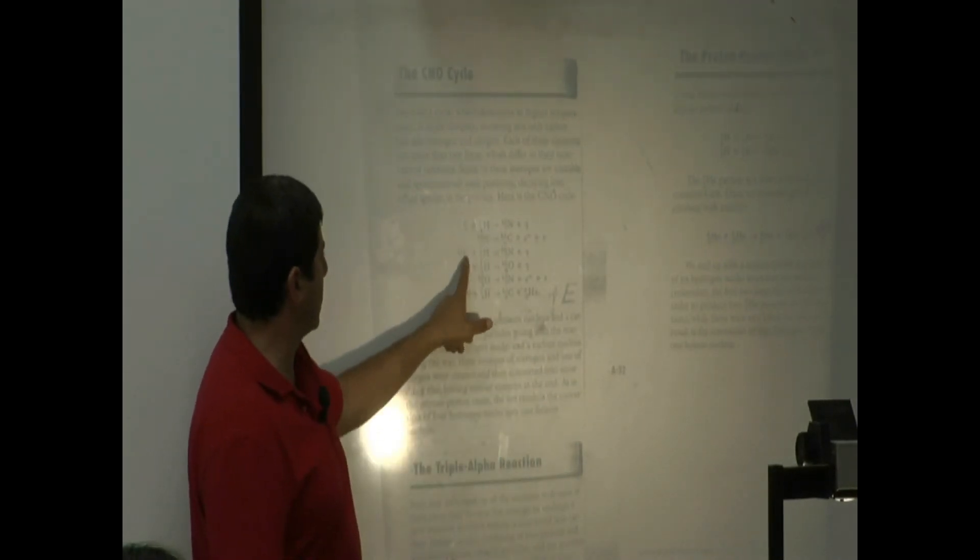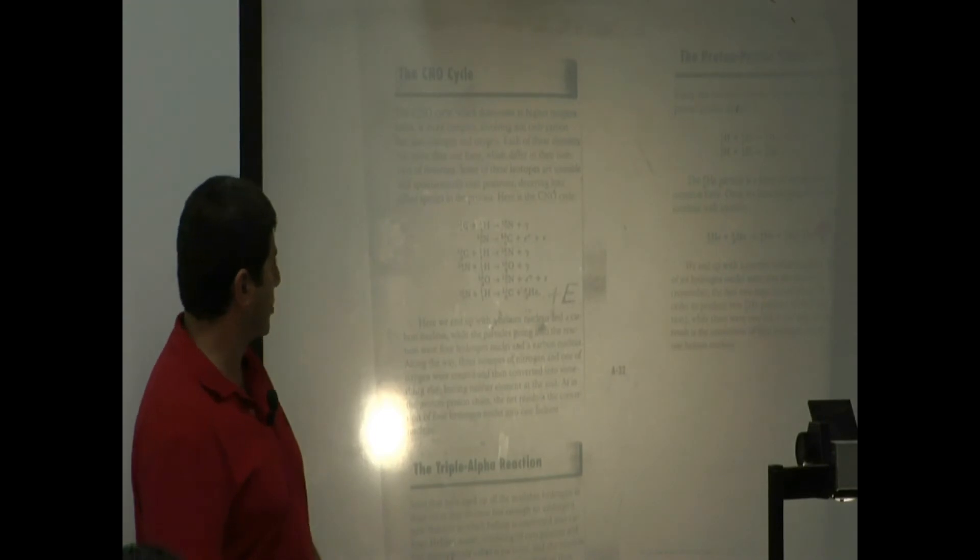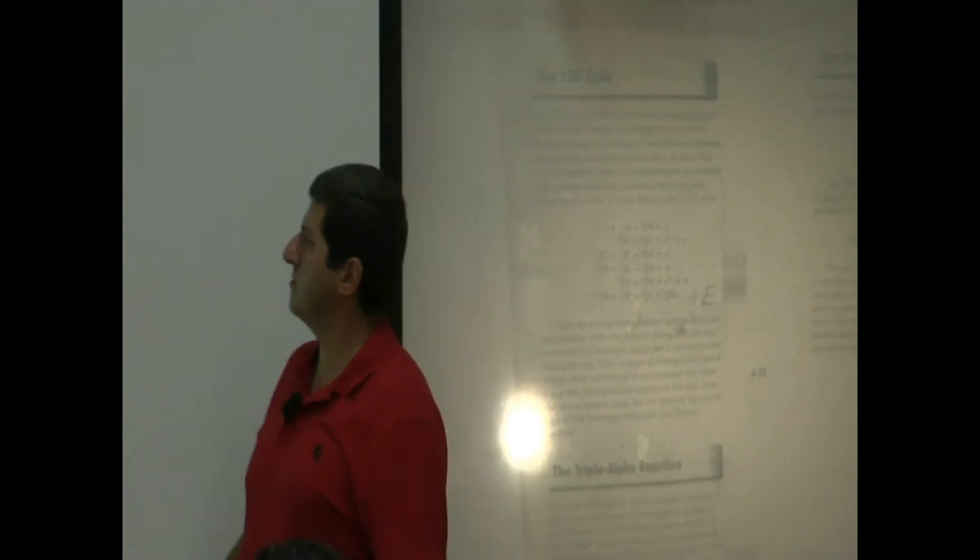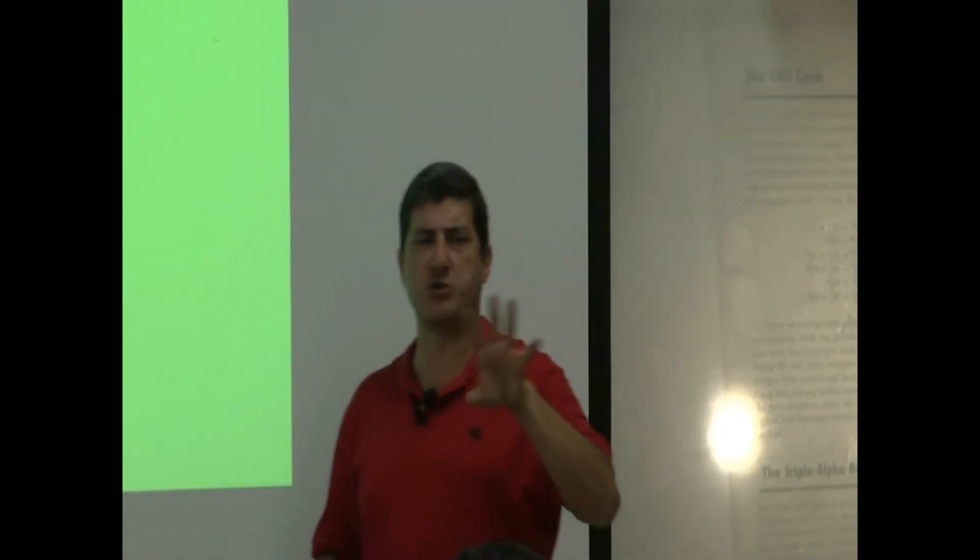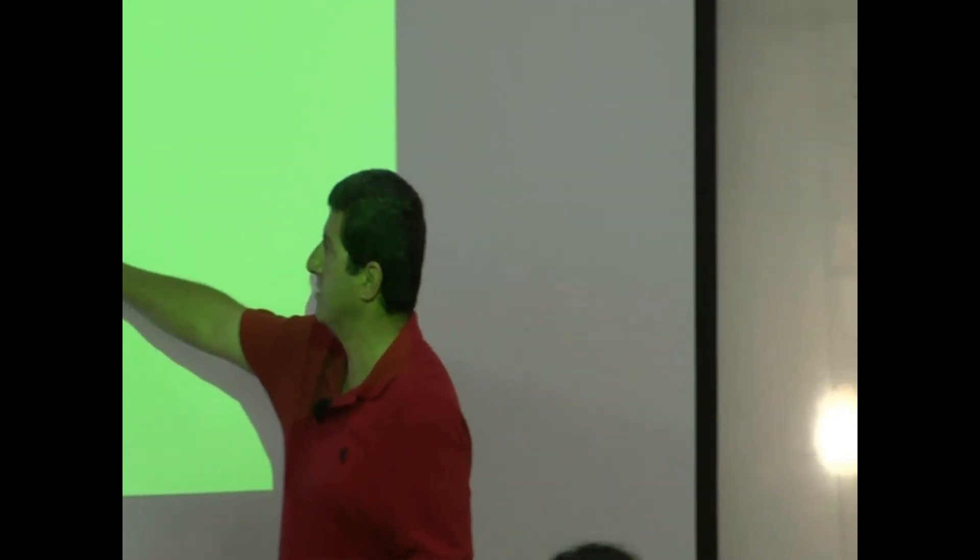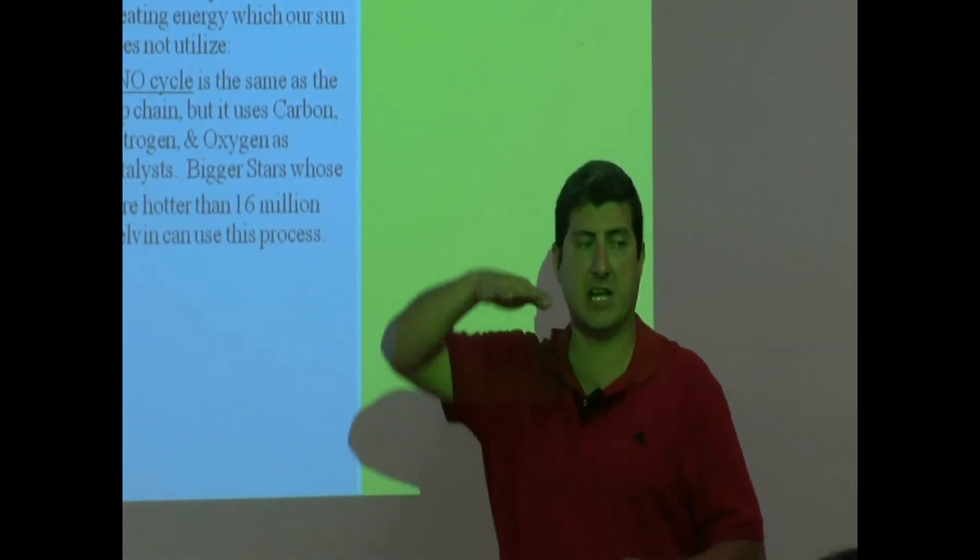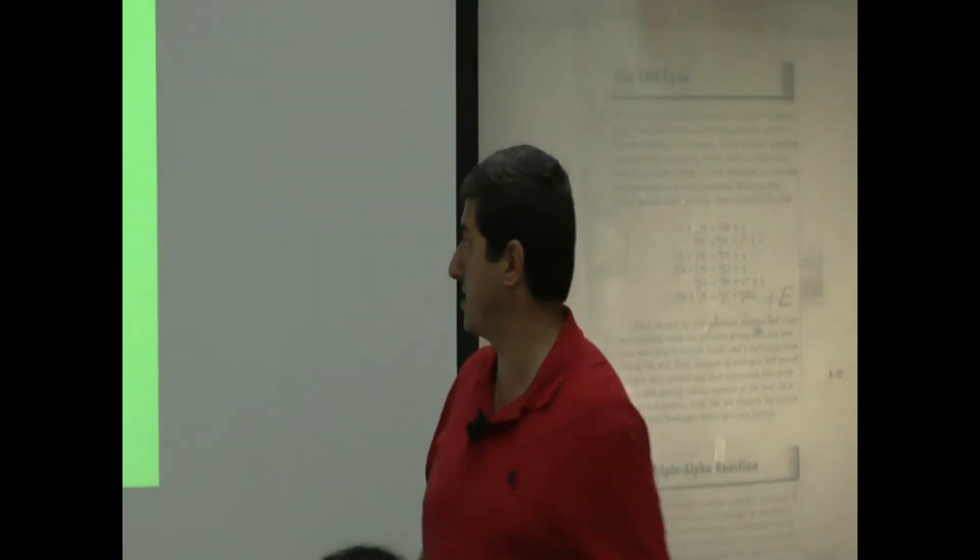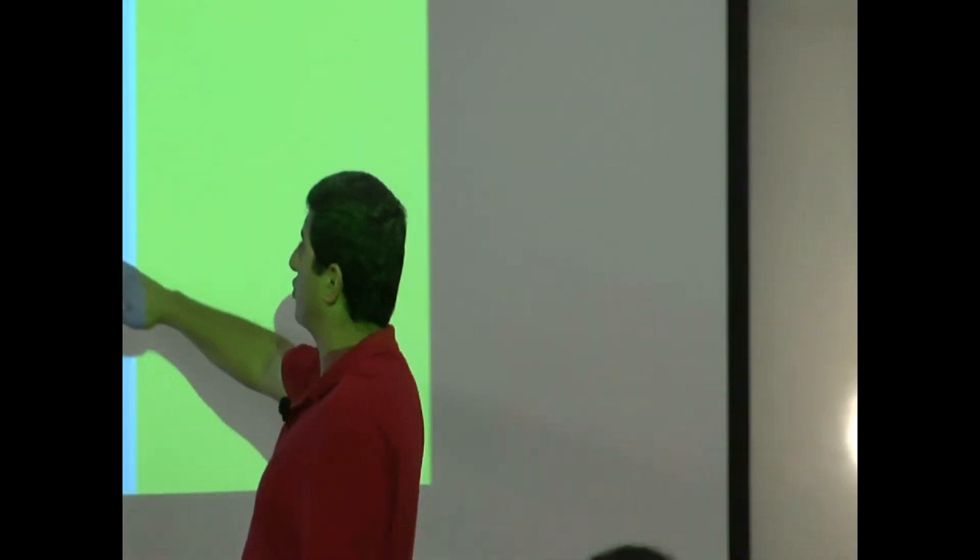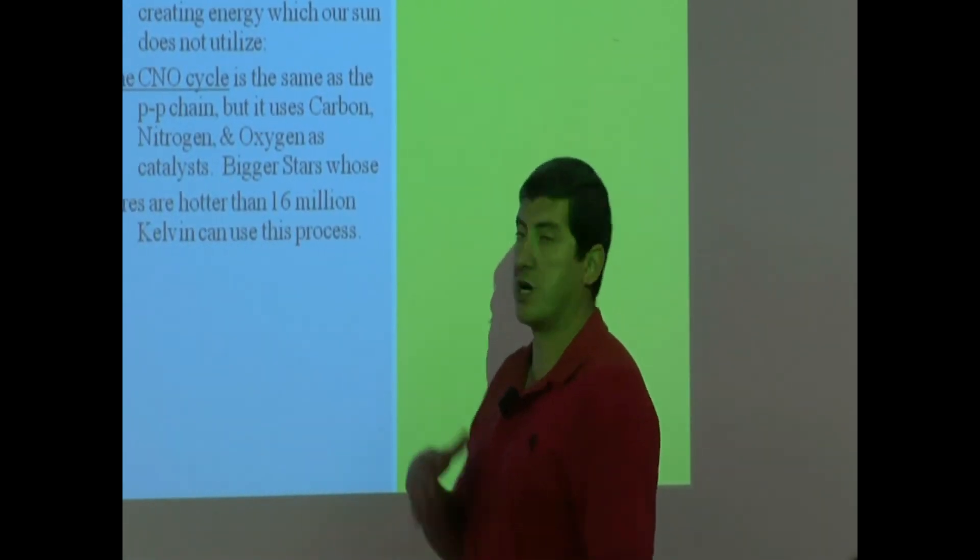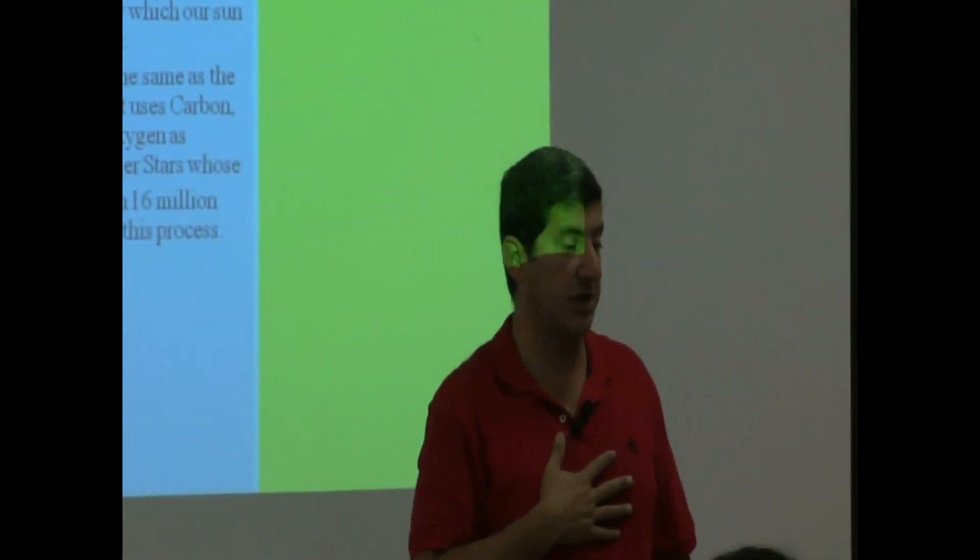Some of these isotopes are unstable and then spontaneously emit positrons, decaying into other species. Here's the CNO cycle. Carbon, hydrogen, nitrogen, so on and so forth. So basically, the effect is you end up with energy and helium again. So for our purposes, just remember that the CNO cycle is kind of like the proton-proton chain. It happens at higher temperatures and only heavy-mass stars can use this process. Bigger stars, whose cores are hotter than 16 million Kelvin, can use this process, so our sun will never use this process.